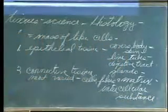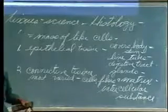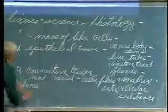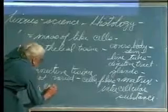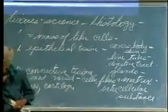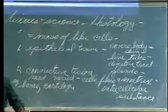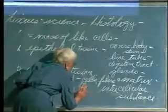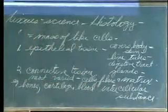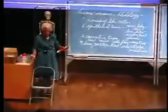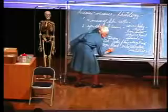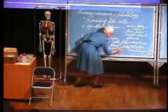What are examples of connective tissues? Bones are a connective tissue. Cartilage. And believe it or not, blood. You could ask, what's the matrix in blood? You know you have cells - what's the matrix? Plasma, the fluid. It's the intercellular substance, so the matrix is the plasma.